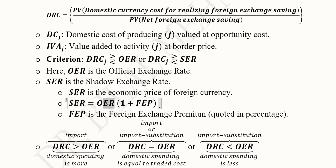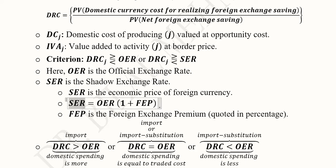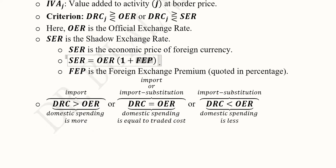The shadow exchange rate is found by multiplying OER by the factor (1 + foreign exchange premium), where the premium is expressed as a percentage. The foreign exchange premium includes factors affecting the overall economic situation that are not considered in financial analysis. This is how the shadow exchange rate is derived before we compare DRC with OER or SER.